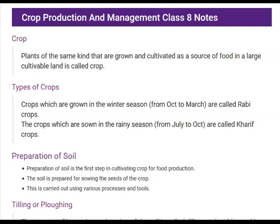Food is very important for our growth and for all other activities going on in our body, and it is also required for plants. The farmer is our feeder — he is the one who feeds us. Crops are plants of the same kind that are grown and cultivated as a source of food in a large cultivable land. There are two types of crops in India: Rabi crops and Kharif crops.